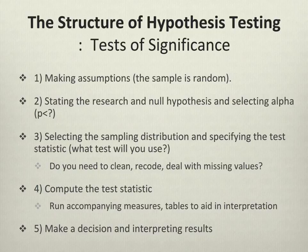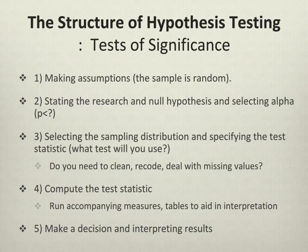In order to truly test a hypothesis, you have to start with certain assumptions about your data — and you have to make them so in your research design. First and foremost, the sample has to be random. If there's some sort of bias in your sample, it's very problematic. You have to state your hypotheses and their nulls, your alpha level, your p-value, and what test statistic you're going to use. You'll also need to consider whether you need to clean, recode, or deal with any missing values in your data. Then compute the test statistic and run any accompanying measures or tables to help aid in interpretation.